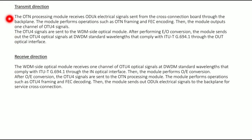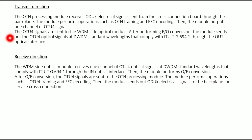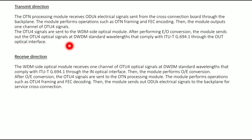Transmit direction detail: The OTN processing module receives electrical signals from the cross connect board via the backplane. The module performs operations such as OTN framing and FEC encoding, then outputs the channel of OTU4 signal. The OTU4 signals are sent to the WDM side optical module, and after electrical to optical conversion, the module sends out OTU4 optical signals at DWDM standard wavelength compliant with ITU-T through the output interface.